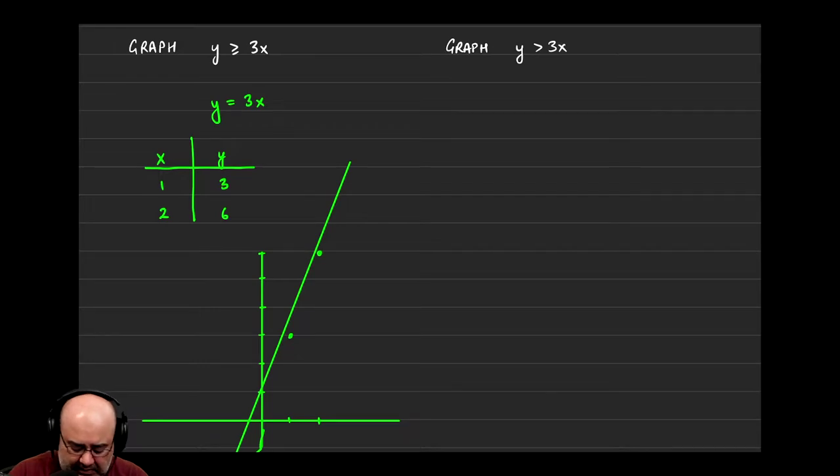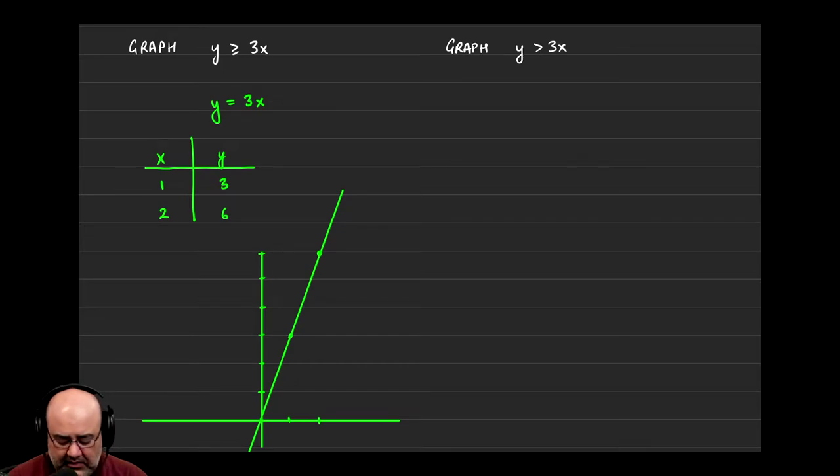So because it's greater than or equal to 3x, that means that when I join these two dots, not a very good straight line. All right, maybe that's a little bit better. Now, remember that if it were just y equals 3x, we're done. All the solutions to that equation are the line itself. But because we're graphing an inequality, y is greater than or equal to 3x, we have to graph the region that contains all the solutions. So it'll either be up and to the left of this line, or down and to the right of this line.